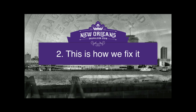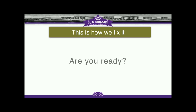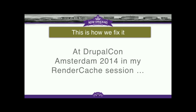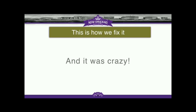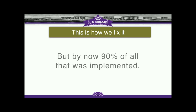Now we're coming to how we fix that. At DrupalCon Amsterdam 2014, in my render cache session, I shared my vision about how render caching could all work. At that point Drupal 8 only had cache tags and it was a little crazy overall. But by now 90% of all that is implemented in core — directly shipped. BigPipe is in core in 8.1, placeholders in core, everything. So I'm just trying that again.